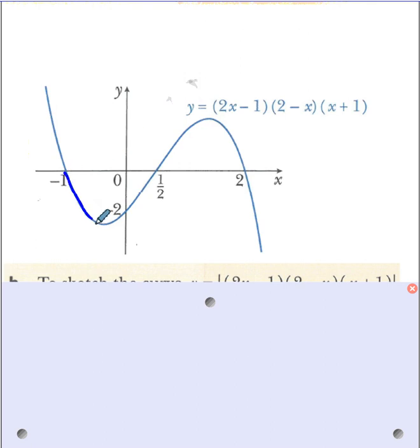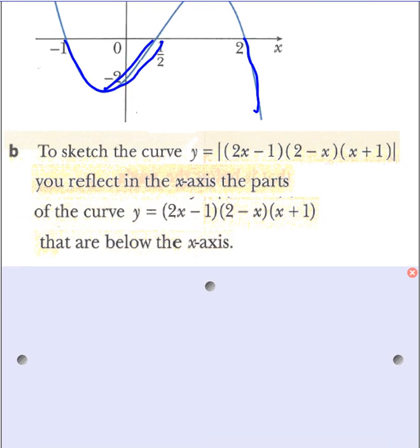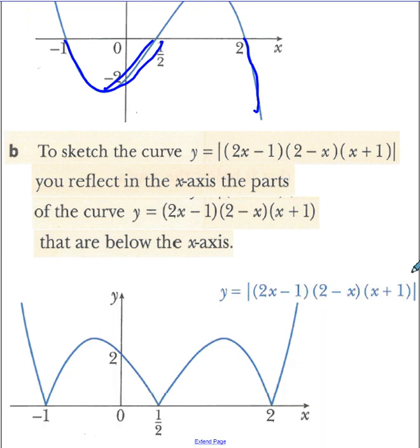So this part will reflect in the x-axis. Similarly this part will be reflected in the x-axis here. So I will show you here the sketch. See here this below part is reflected here. Now it is passing through 2 because it was passing through -2 here and this below part is reflected here. So second part is basically the understanding.